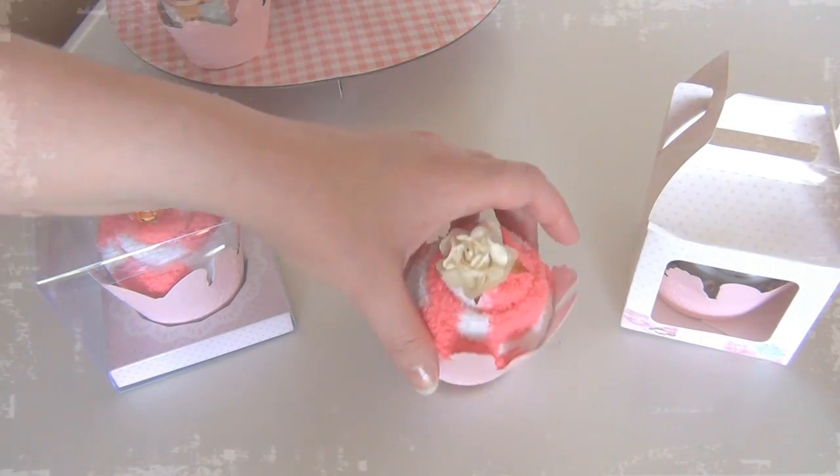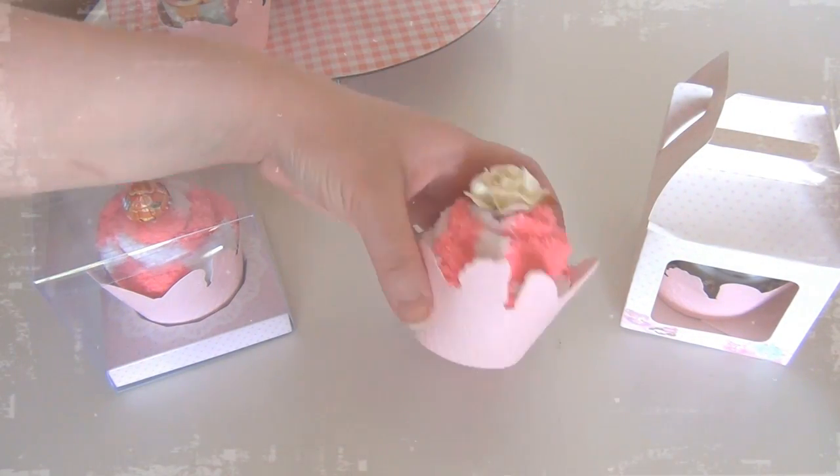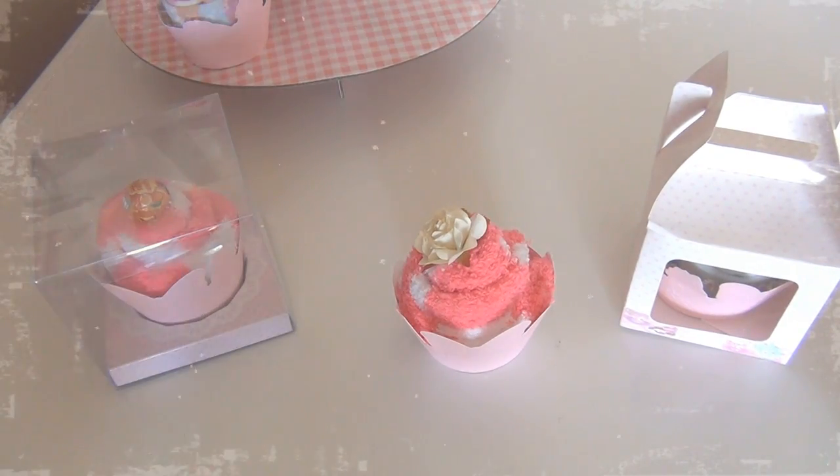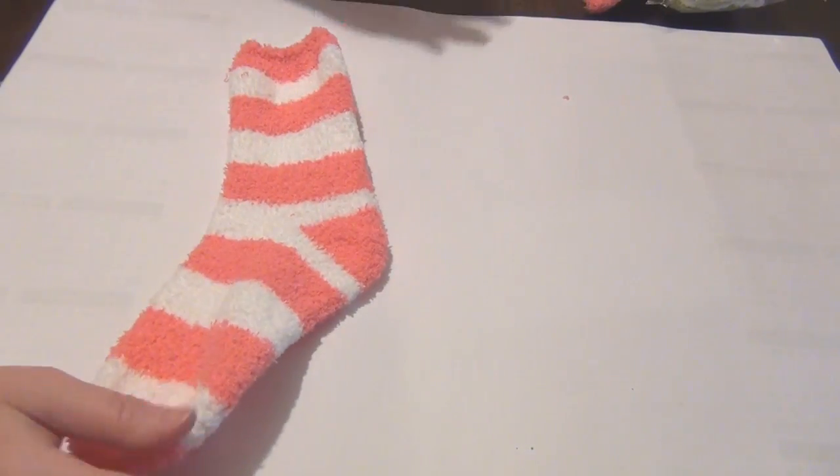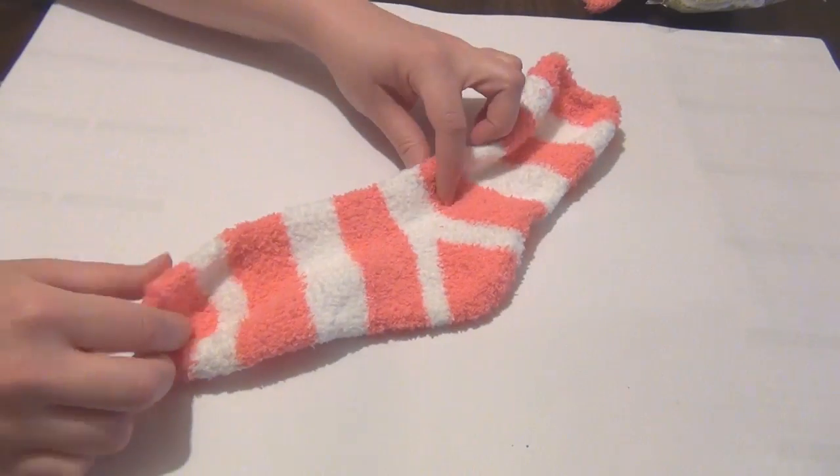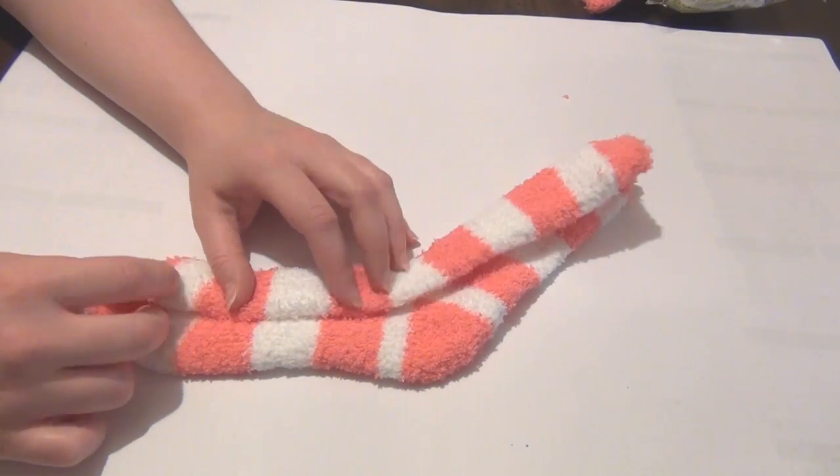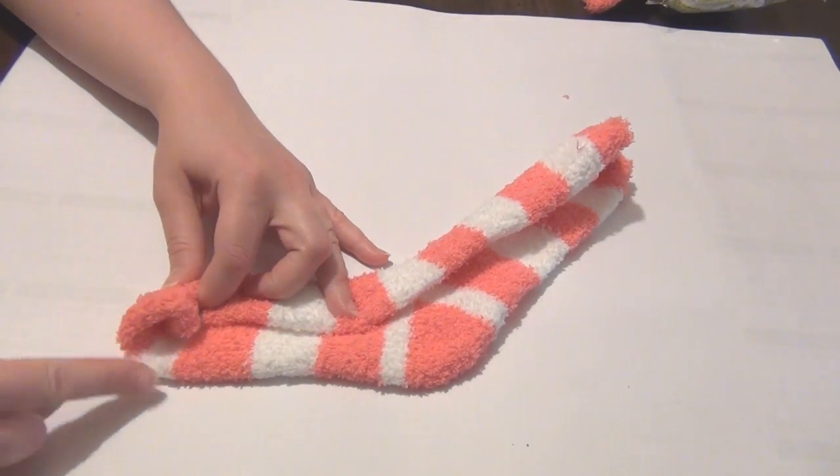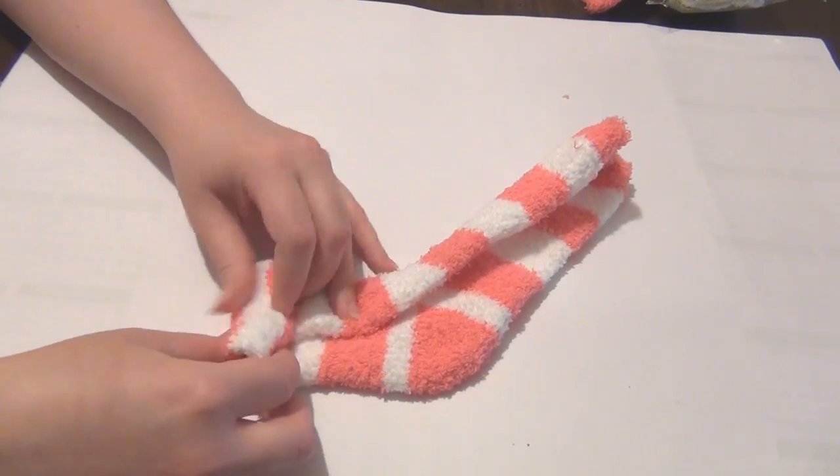And next I'm going to be showing you how to make this adorable sock cupcake. Take your cozy sock or fuzzy sock and split them up. Just take one of them at a time and fold that in half and then start rolling.